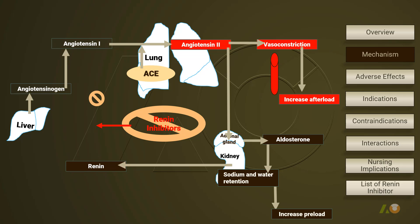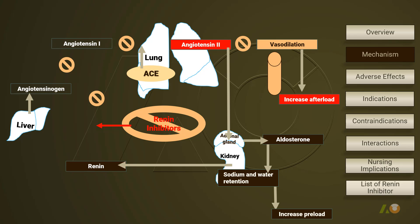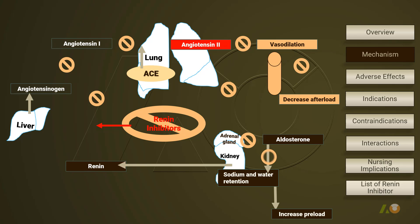It stops the chain reactions of RAS at the early stage. Following the effects of a renin inhibitor, conversion of angiotensinogen to angiotensin 1 is blocked. The waterfall effects lead to decreasing angiotensin 2. Therefore, blood vessels dilate, blood pressure drops, and afterload decreases. Decreasing angiotensin 2 also affects aldosterone secretion, interrupting reabsorption of sodium and water in the kidneys, and resulting in decreased preload.